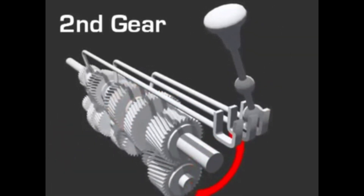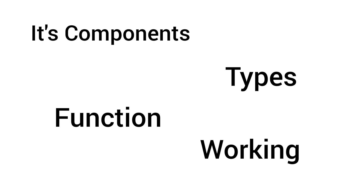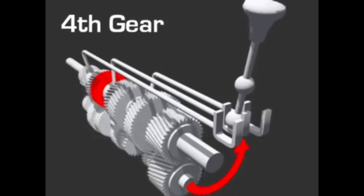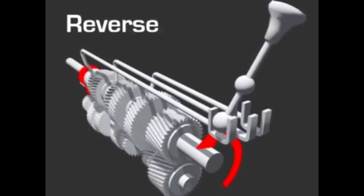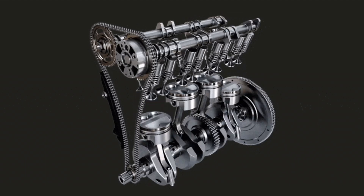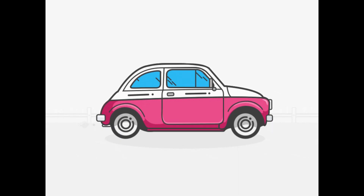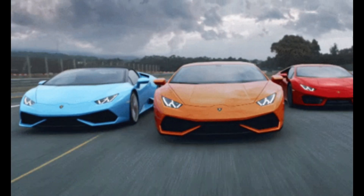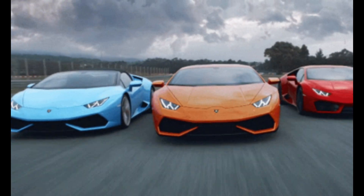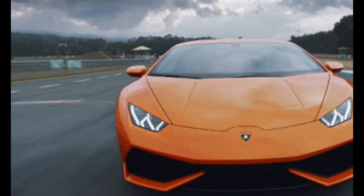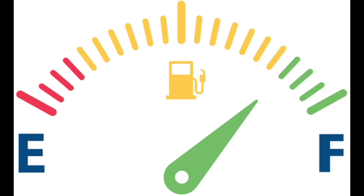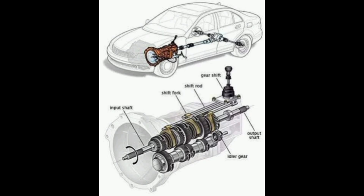The transmission system in an automobile is a vital component of any vehicle, serving as the bridge between the engine's power and the wheels that drive the vehicle forward. This system enables seamless control over the speed and direction of the automobile, allowing it to navigate various road conditions and terrains. This technology has evolved significantly over the years, enhancing driving effort, fuel efficiency, and overall performance, from manual to automatic transmission.